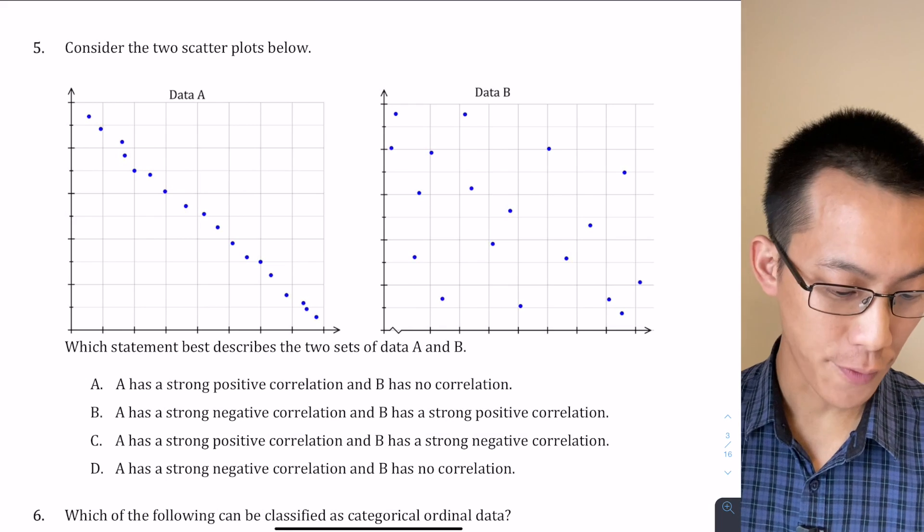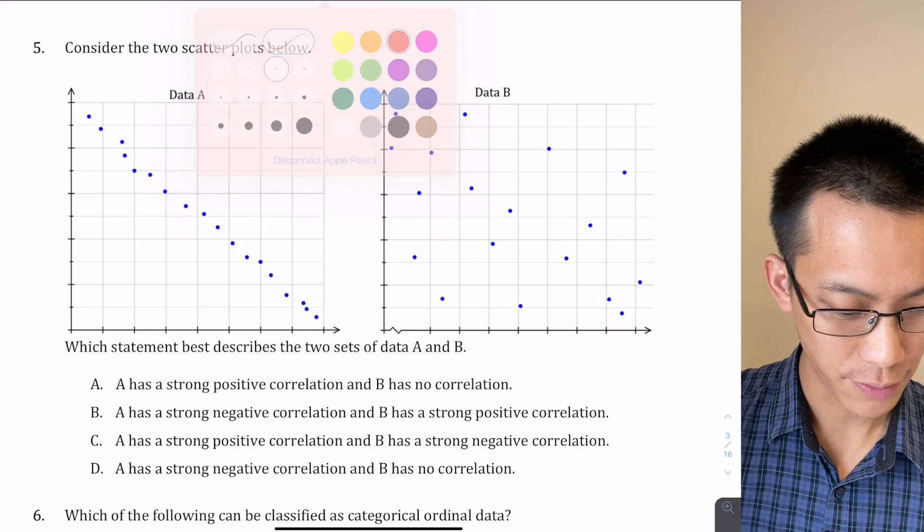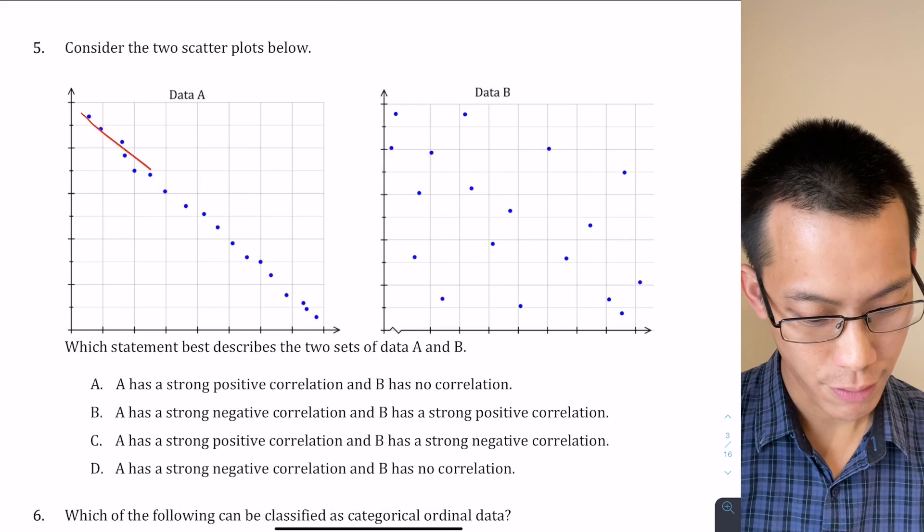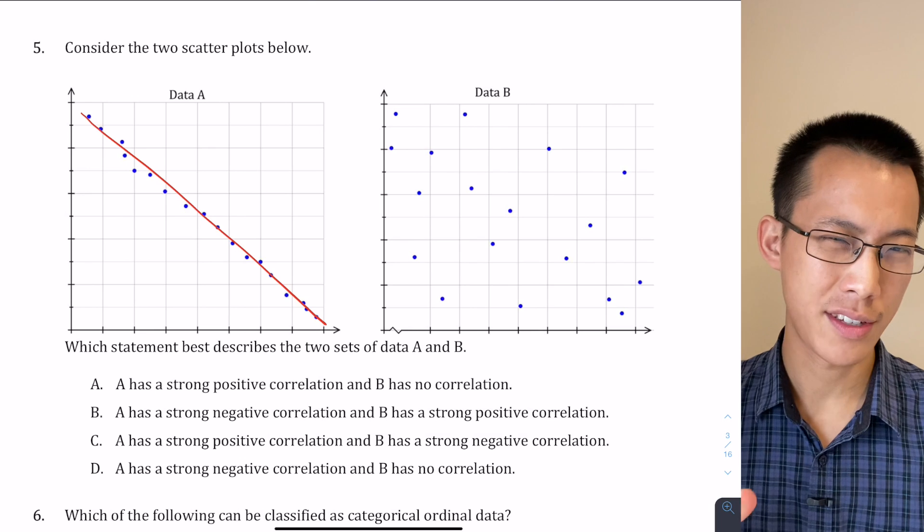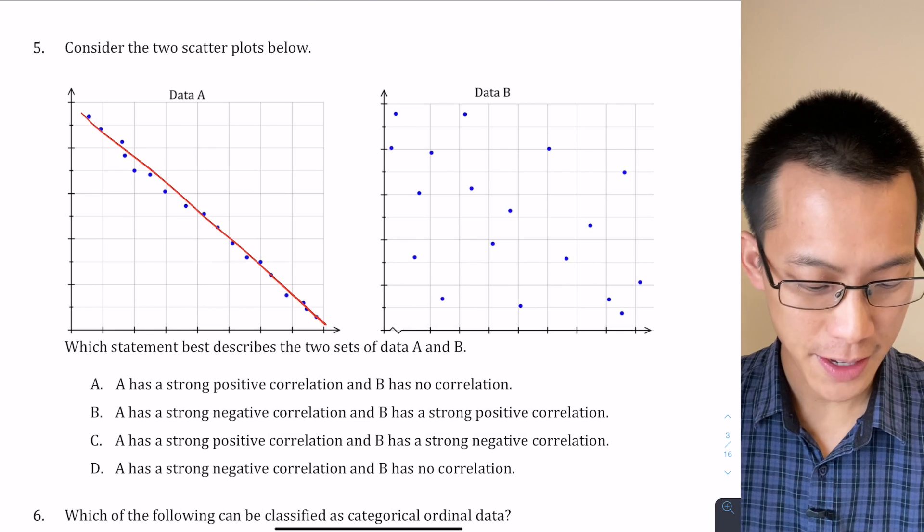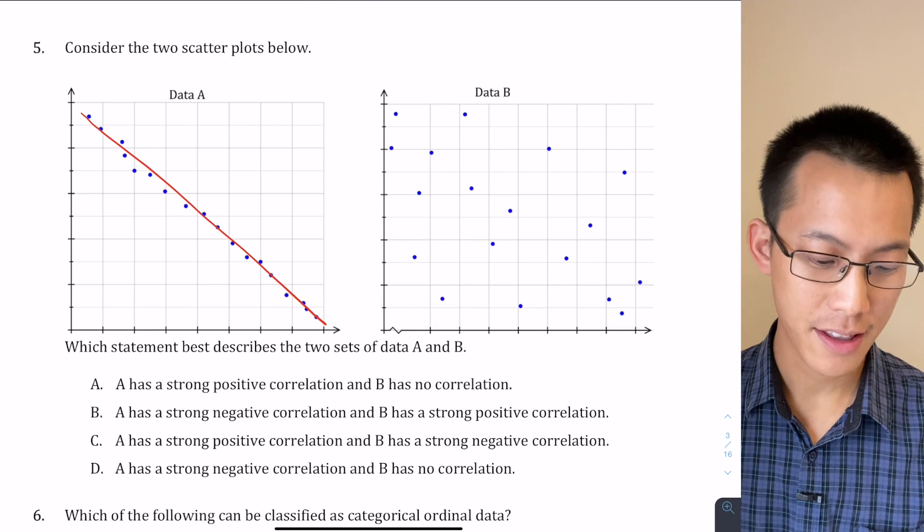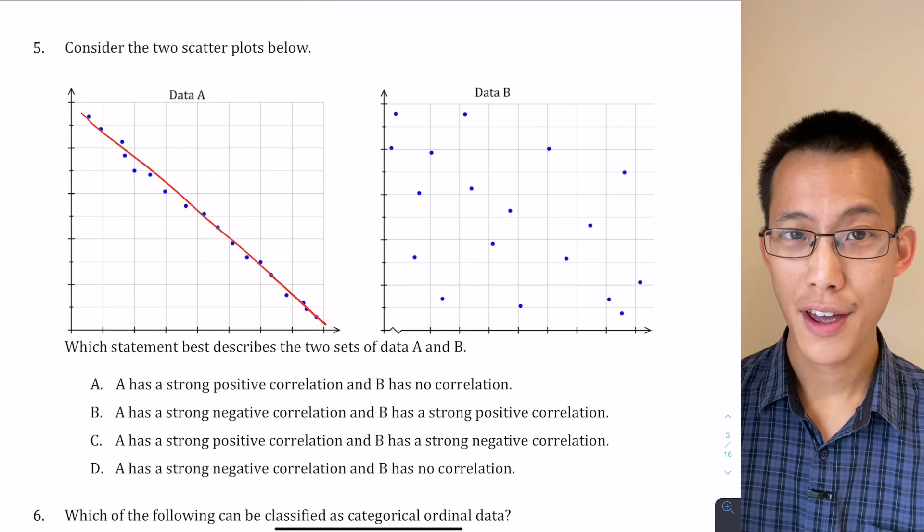So it's fairly straightforward to see if you draw a trend line, let's choose a different color here, a rough trend line through set A. All of the data points are sticking very close to this rough line of best fit, and in addition to that, the line of best fit has a negative gradient.